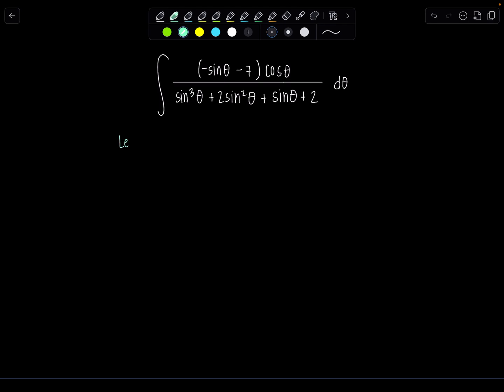So let's let u be sine theta and that was jumping out at me because notice the denominator is a function of sine theta. I've got this negative sine theta minus 7 and then one lonely little cosine theta d theta. That'll just beautifully get absorbed in this u sub because du is that's right cosine theta d theta.